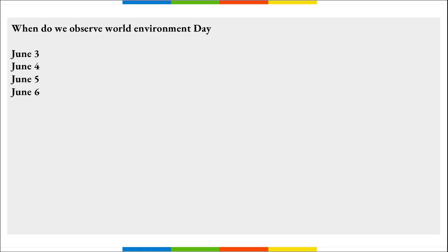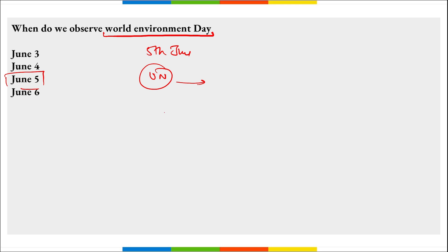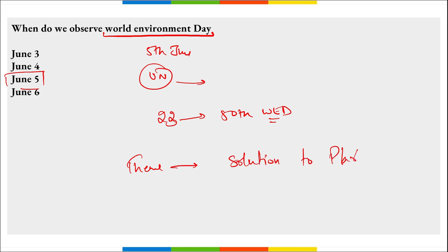When do we observe World Environment Day? This day is observed on 5th of June. This is an important day and this question has been asked multiple times in exams. With rising temperatures and global warming, environment day has become very significant. It is observed by the United Nations on 5th June globally, to create awareness about protecting the environment and the efforts taken by various stakeholders to address environmental issues. In 2023, it was the 50th edition. The theme is 'Solutions to Plastic Pollution.'